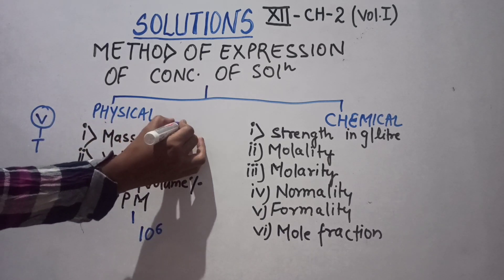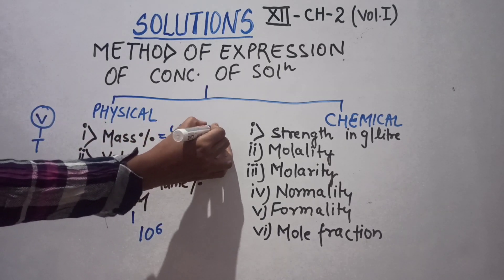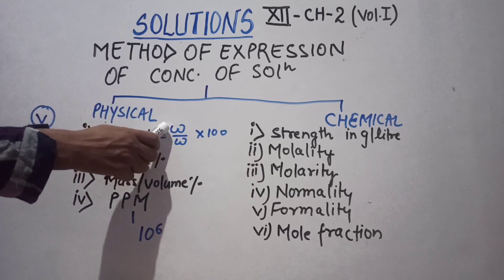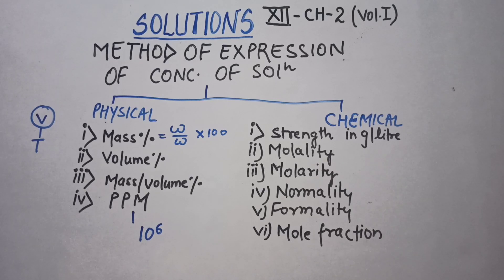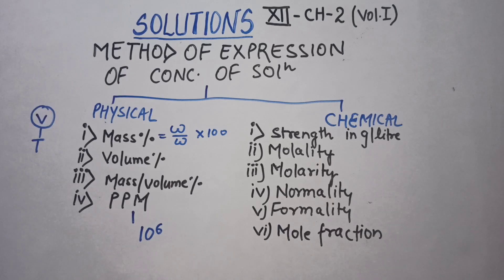For mass percentage, the formula is (weight of solute / weight of solution) × 100. Both weights are in grams, so there is no volume involved — this is temperature independent.